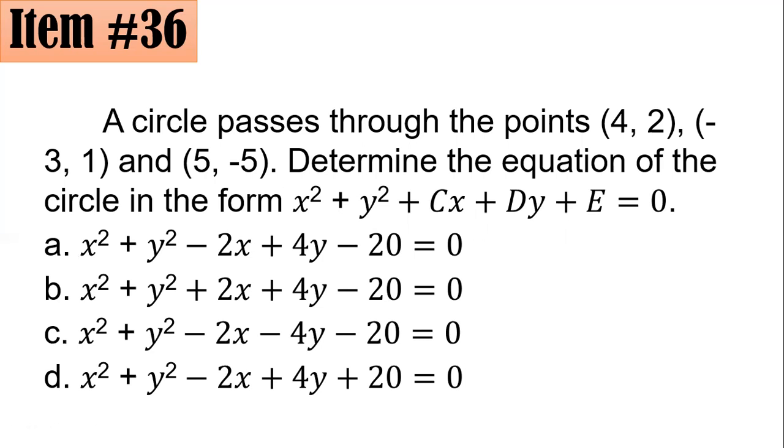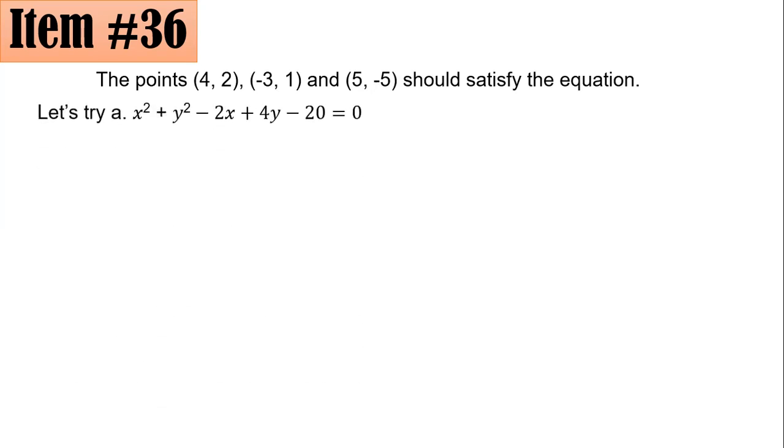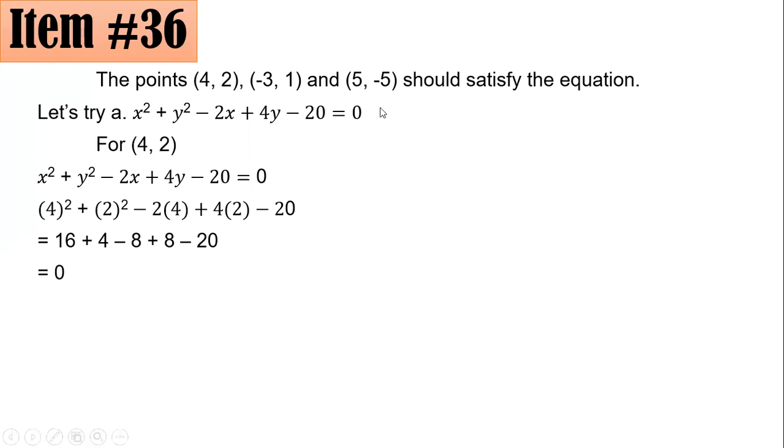Let's try letter A. Let's try (4, 2). If you replace all x's by 4 and all y's by 2, you will arrive at 4² + 2² - 2(4) + 4(2) - 20. Simplifying gives 16 + 4 - 8 + 8 - 20, and the value is 0. It's 0 here, so therefore they are equal. It satisfies this one.